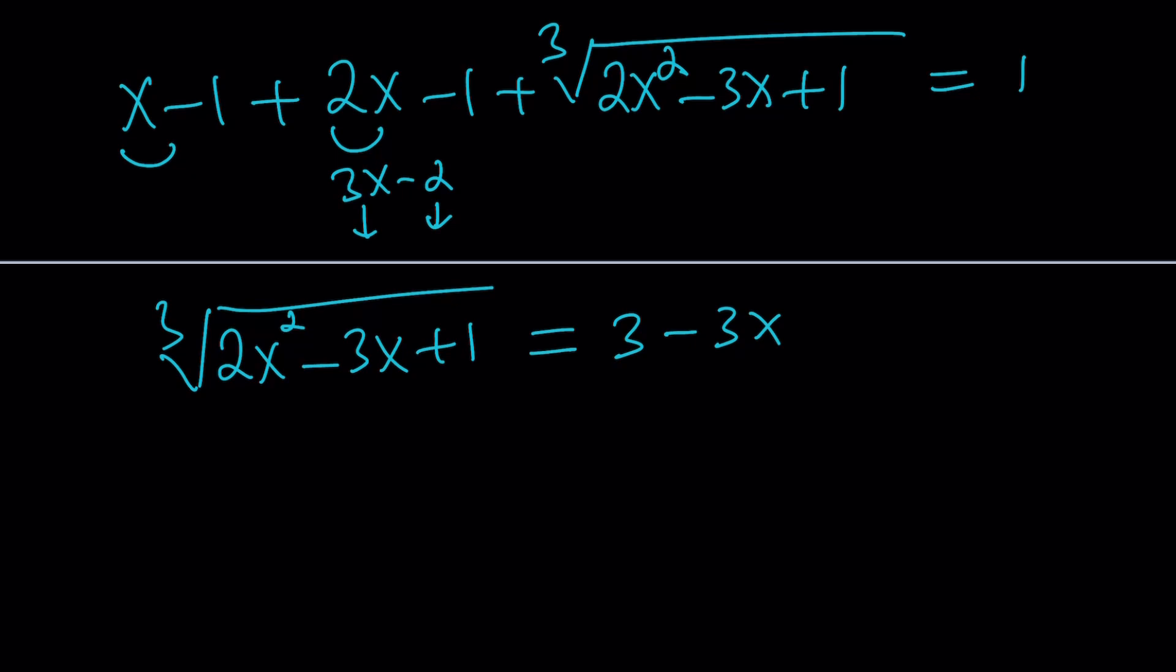So this is going to give me 3x minus 2. And if you put it on the right-hand side, just negate it. You're going to get cube root of this expression equals 1 minus that, so it's going to be 3 minus 3x. Because this is going to be negative, this is going to be positive. Let's go ahead and cube both sides now. One more time, because we want to get rid of all the radicals. That can be done by cubing.